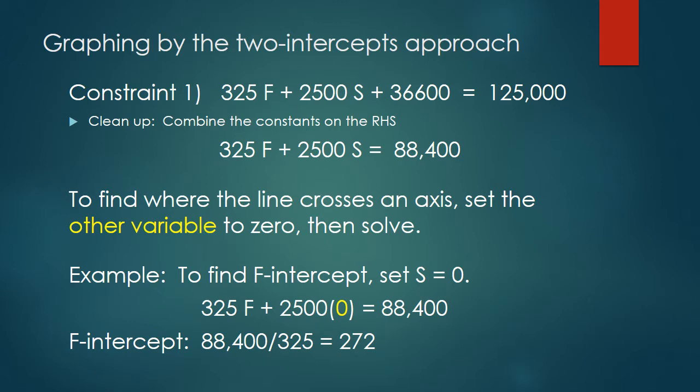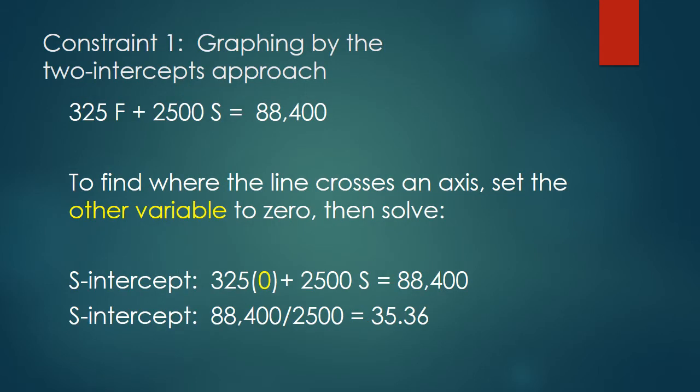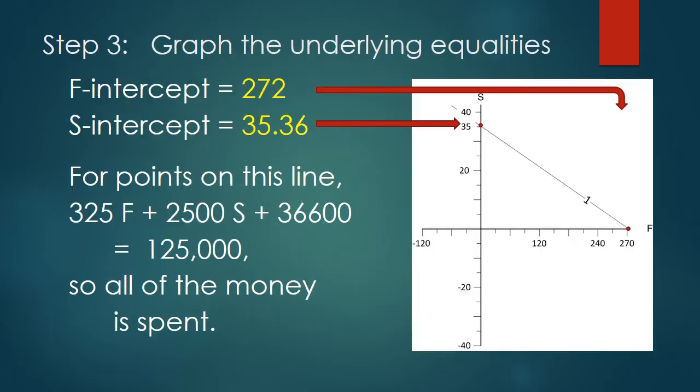Let's try that. You see the equation at the top of the page. I'm going to replace S with zero, leaving an equation that involves only F. Solving for F then will tell me the F-intercept of that line. My particular line crosses the F-axis at 272. Now we'll play the same game with the other axis. We want to find the S-intercept, so we'll set F equal to zero in the constraint, and when we do so and solve for S, we get that S is 35.36. So the line that I want crosses the S-axis at 35.36 and crosses the F-axis at 272. Those are the two red dots. Connect them with a straight line, and bingo, you've got the line that corresponds to your constraint.